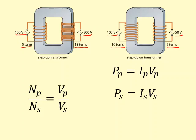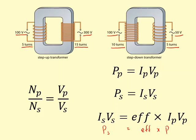No transformer is 100% efficient. You might be asked to assume that it is, but normally you have to use this equation. So the power in the secondary will equal the efficiency times the power in the primary.